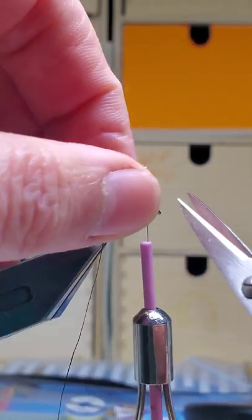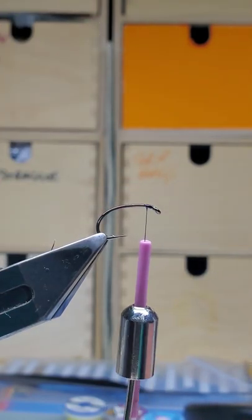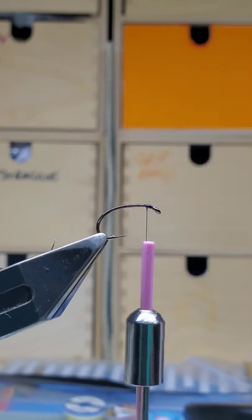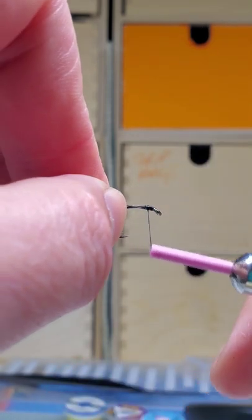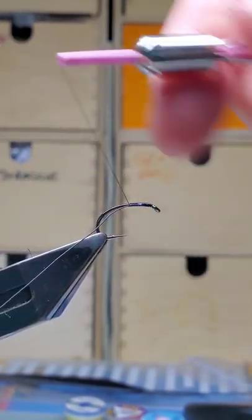Take away your waste. The rib is UTC wire in black. Catch that on the side and run your thread down.